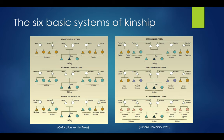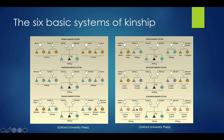Lastly, the Sudanese kinship system again has father and mother with their same-sex siblings also being called father and mother, and it recognizes cousins as siblings, but defines cousins differently: father's sister's children are type one, father's brother's children type two, mother's sister's children type three, and mother's brother's children type four.